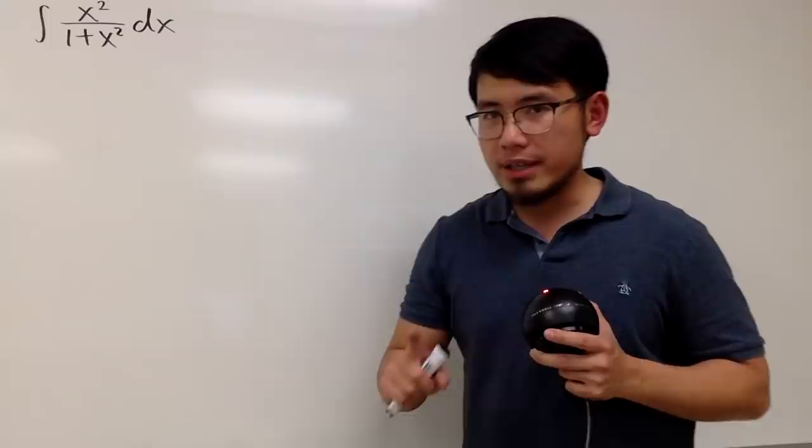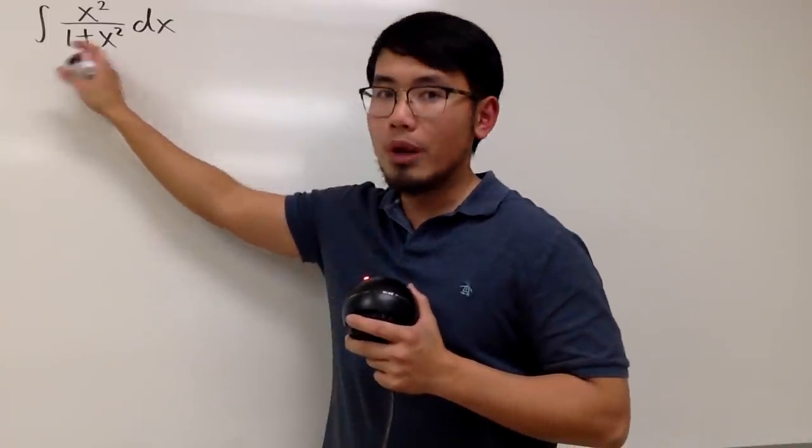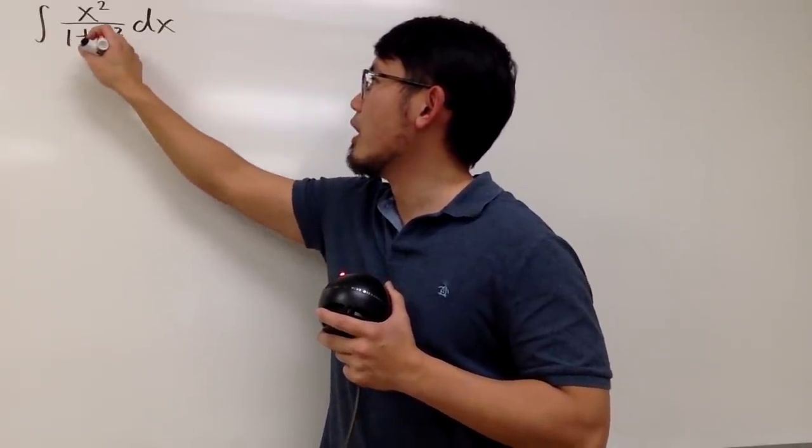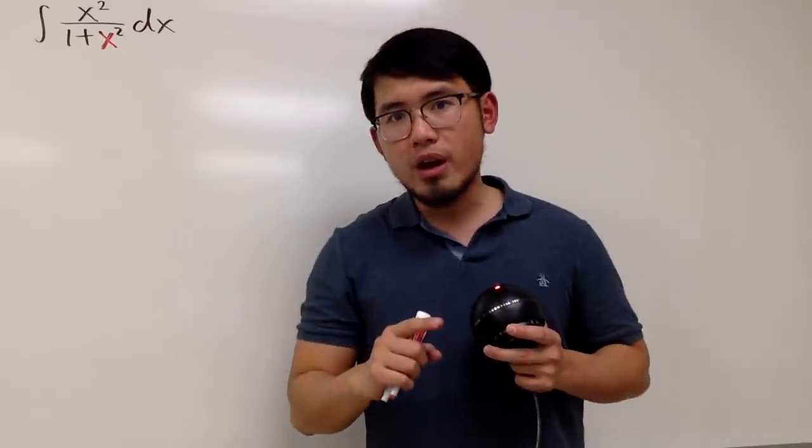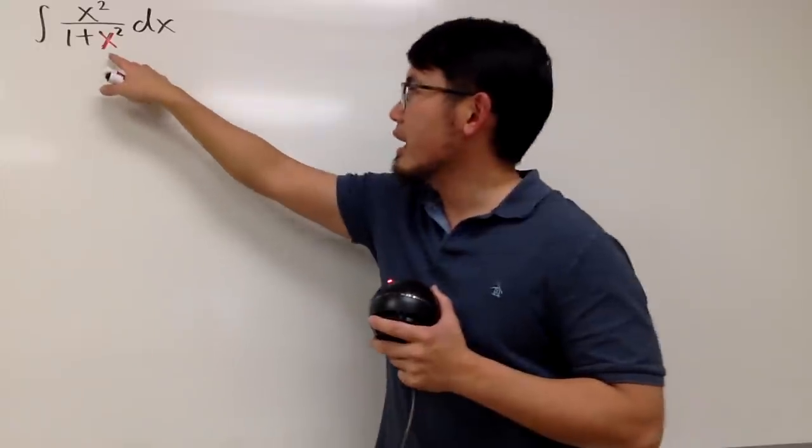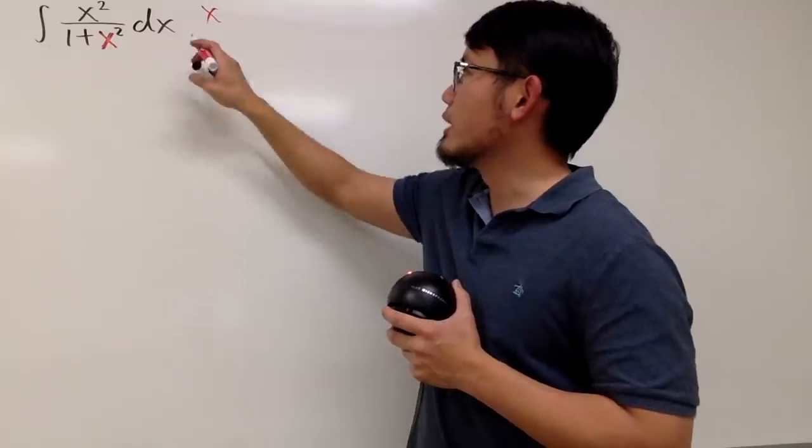But anyway, I will demonstrate trig sub for you guys first. Right here, as we can see, for the bottom we have two terms, namely 1 plus x squared. And we know that 1 plus tangent squared will give us secant squared, so I will take x to the theta world, and I will pick tangent for it.